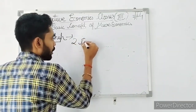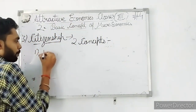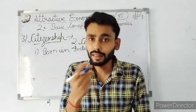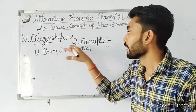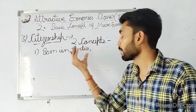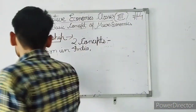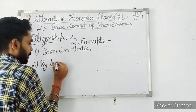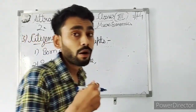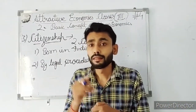Citizenship is basically based on two concepts. Number one: born in India. That means if a person is born in India, he automatically acquires the citizenship of India. Number two: if a person is born outside India and applies for Indian citizenship, and Indian law allows him to get citizenship of India.